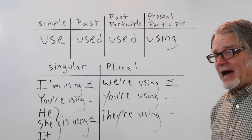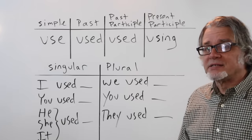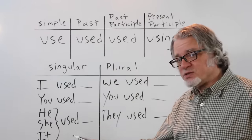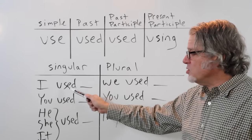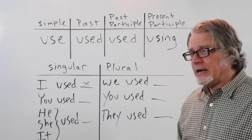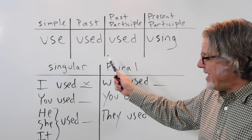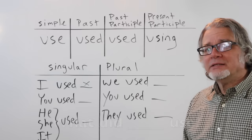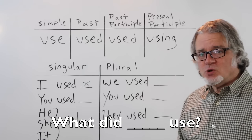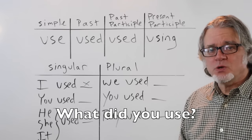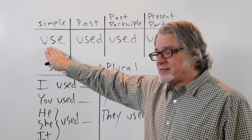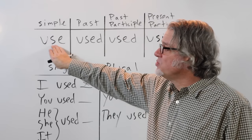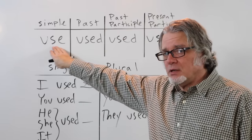In the past tense, it doesn't matter what the subject is, just used. I used, and then the object. This will answer the question, what did somebody use? What did you use? When you make the question, in the past tense or the present tense, use the simple form.